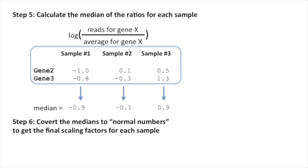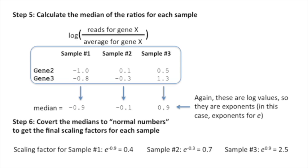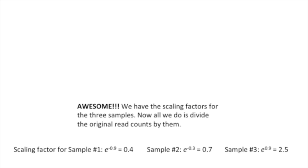Okay, now we're ready for step six. Convert the medians to normal numbers to get the final scaling factors for each sample. Again, these are log values, so they are exponents, in this case, exponents for e. To calculate the scaling factor for each sample, we raise e to the median value for each sample. Awesome! We have scaling factors for the three samples. Now all we do is divide the original read counts by them.